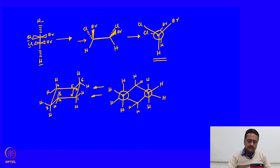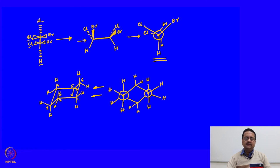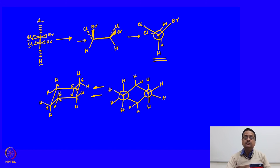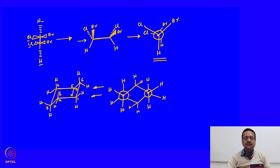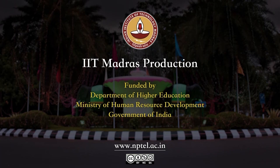I would like you to draw these conformations yourself and practice converting the cyclohexane chair form to the corresponding Newman projection. We will start discussing SN1, SN2, E1, and E2 reactions in the following classes, as we will see next on Tuesday. Thank you.